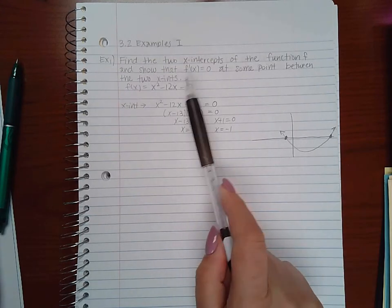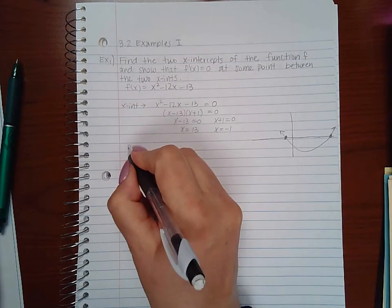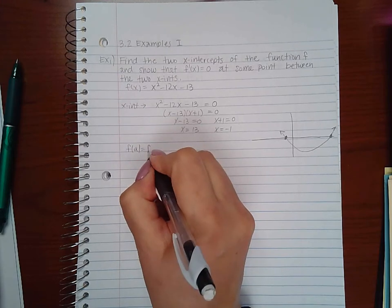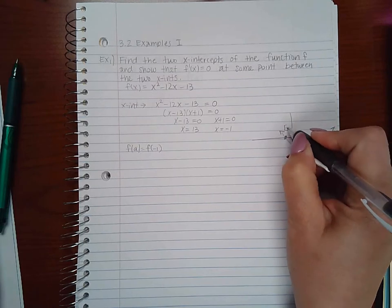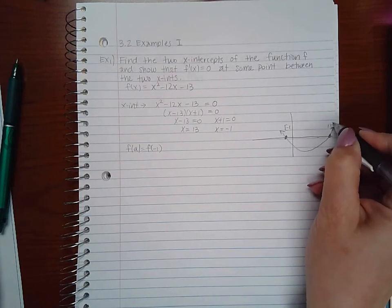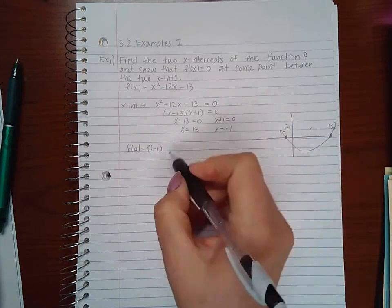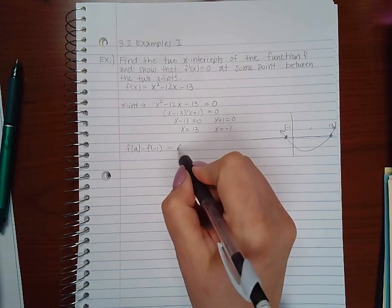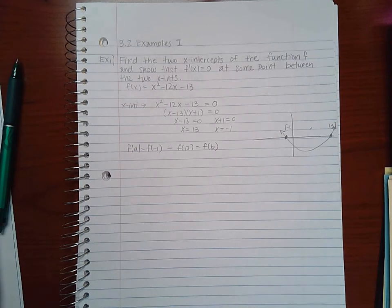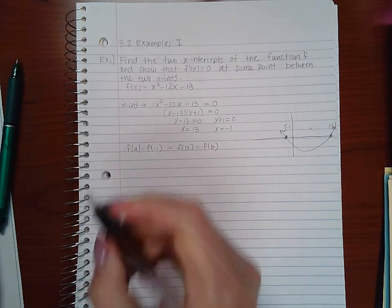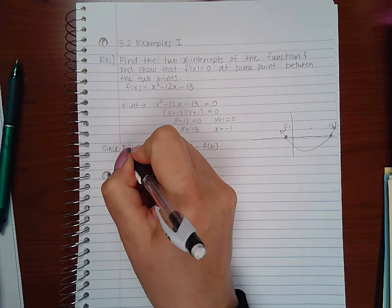Since f of a, being f of negative 1, that would be my interval from negative 1 to 13, equals f of 13, which would be my b value. Okay, so since we have this situation going on.